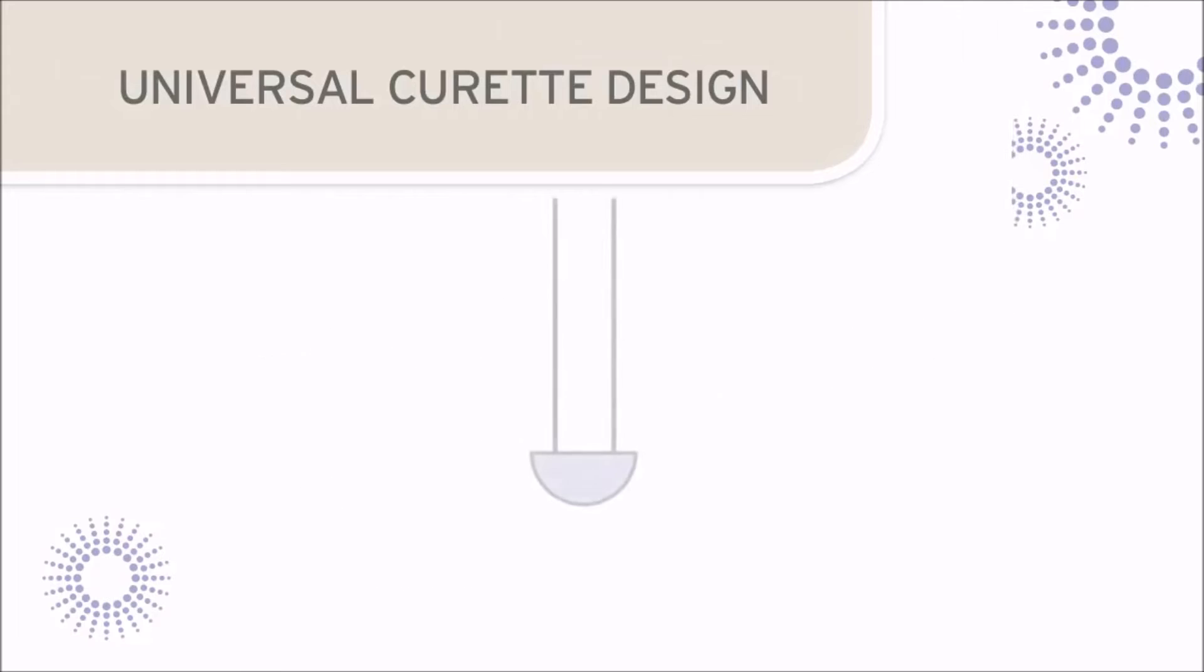The under surface of this blade is rounded and the cross section view reveals a semi-circle blade shape. The facial surface of the blade of a Universal Curette is positioned at a 90 degree angle to the terminal shank. This is a key factor to remember when positioning the blade and stone during sharpening.